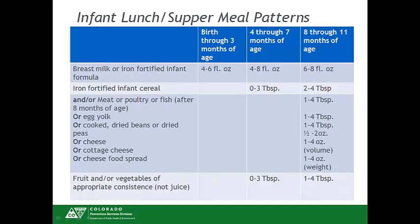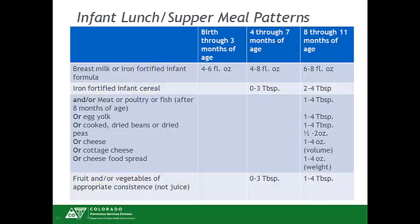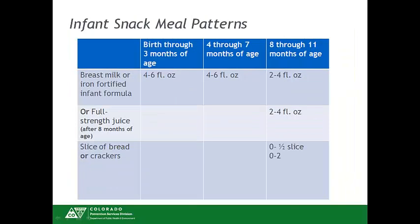For infant lunch and supper, the 0 through 3 month olds only require breast milk or formula. The 4 through 7 month olds require breast milk or formula and, if developmentally ready, infant cereal and a fruit or vegetable. The 8 through 11 month olds require breast milk or formula, infant cereal or a meat-meat alternate such as egg yolk, cooked beans or peas, cheese, cottage cheese, or cheese foods, and a fruit or vegetable.